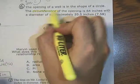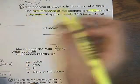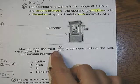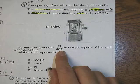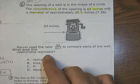So circumference is 64 and the diameter is about that much. It says Marvin uses the ratio 64 over 20.5 to compare parts of the well. What does this relationship represent?